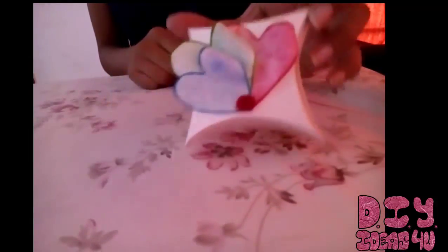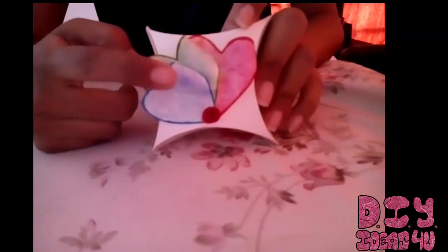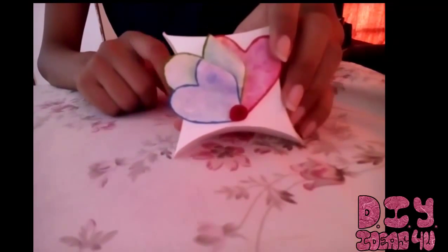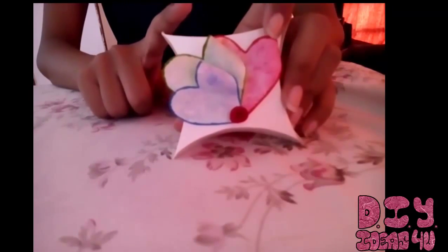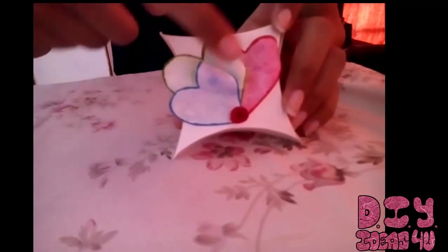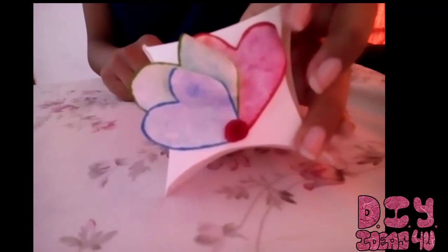So hello people. This is how the final product looks like. What I've done is I have cut these three green, blue and red heart shapes from the same sheet from which I've made this box envelope, and I've stuck them like so by rolling one side.